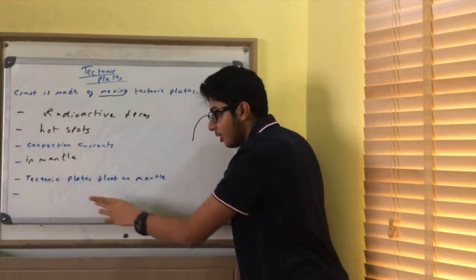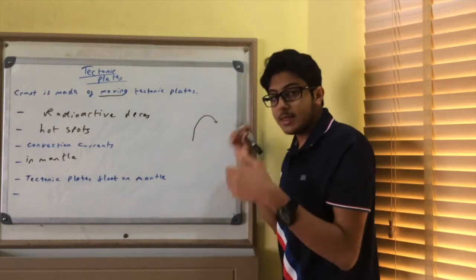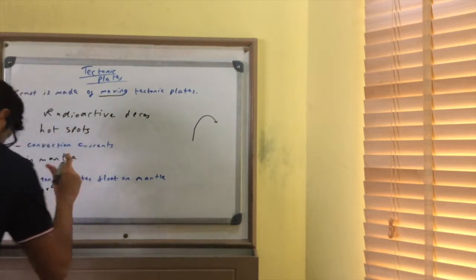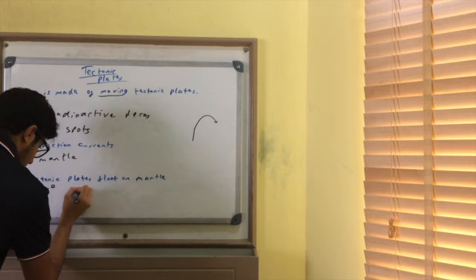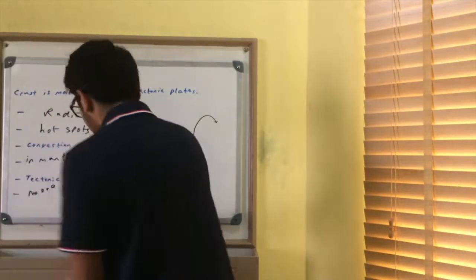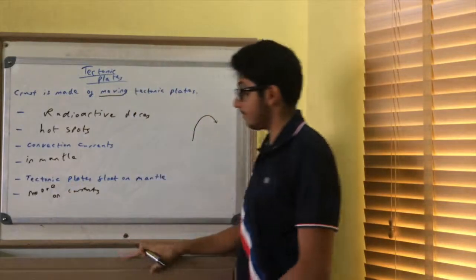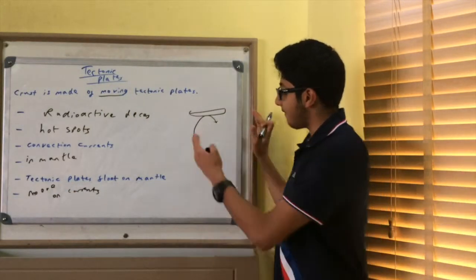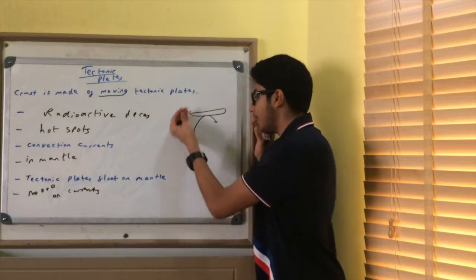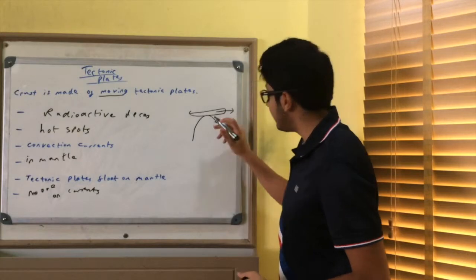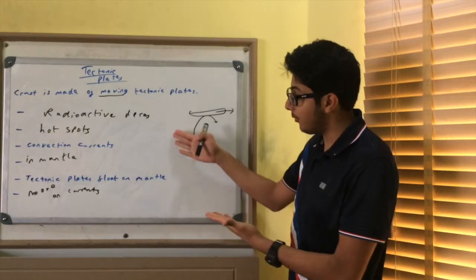Now the tectonic plates that float on the mantle, what happens to them? They move. They move because of the currents. They move on the currents. So here you have a tectonic plate. If you've got a convection current going up, going down, going up, going down, see the motion. It's going to move the tectonic plate.